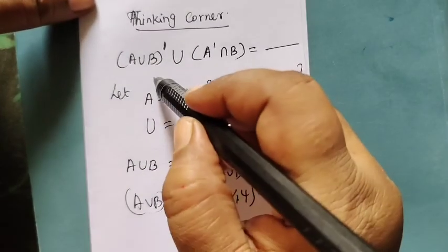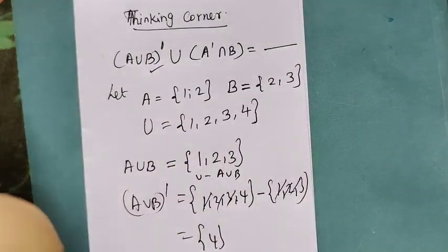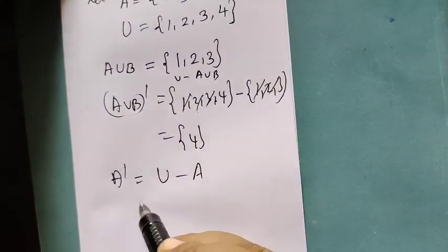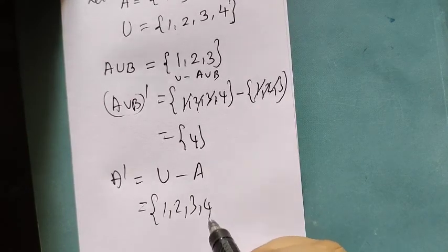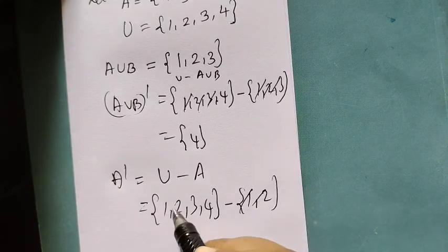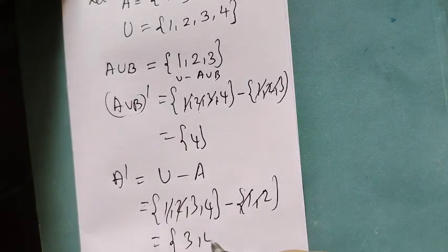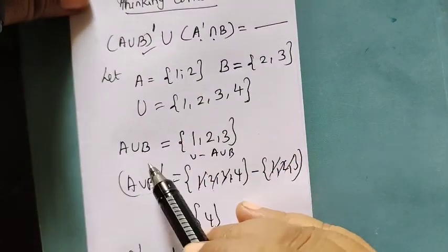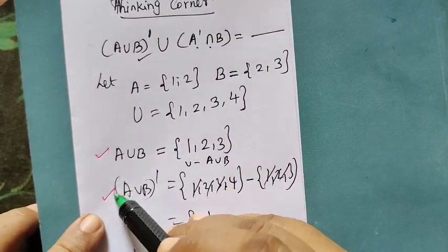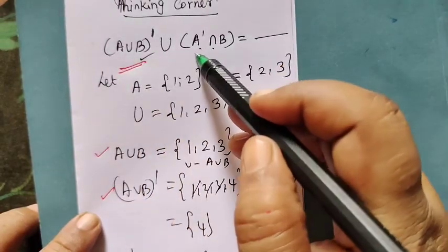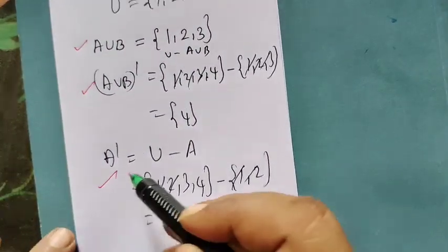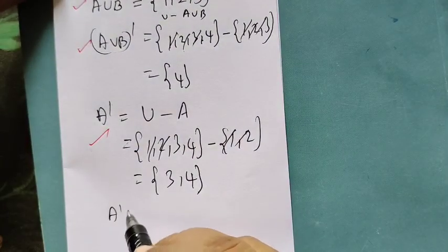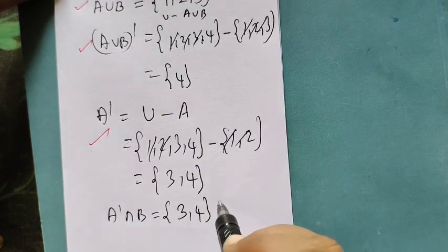Then A union B whole dash. First A union B whole dash, first A dash intersection B dash. A dash we found. A dash is formed, A dash equals U minus A. U is {1,2,3,4}, then A is {1,2}. So 1,2 is cancelled. So {3,4}. A dash is {3,4}.